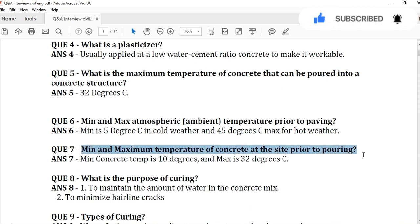Question number 7: Minimum and maximum temperature of concrete at site prior to pouring. Minimum concrete temperature is 10 degrees centigrade and maximum is 32 degrees centigrade.